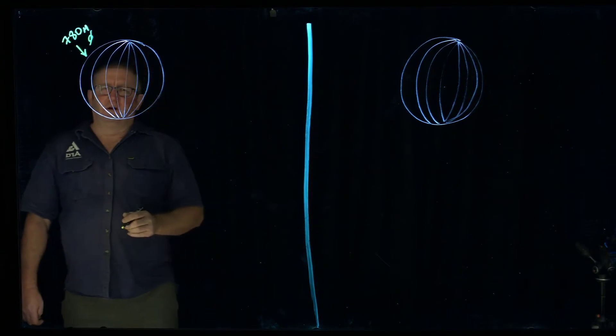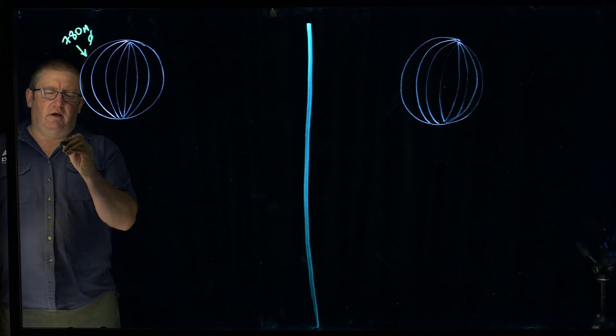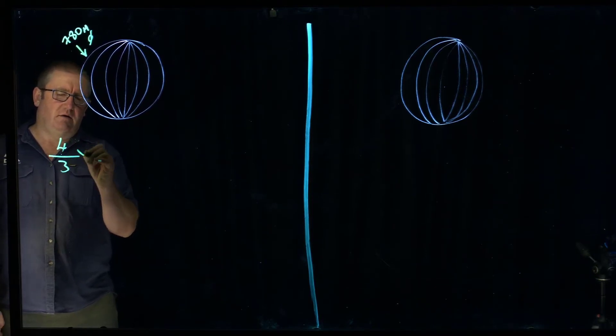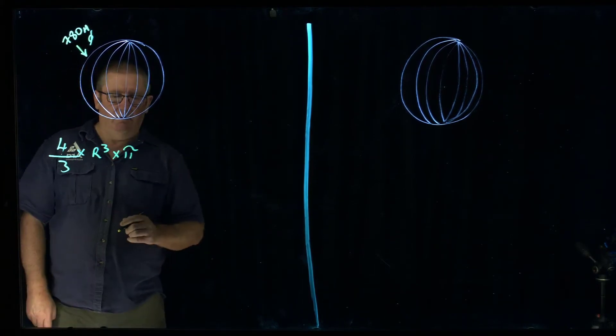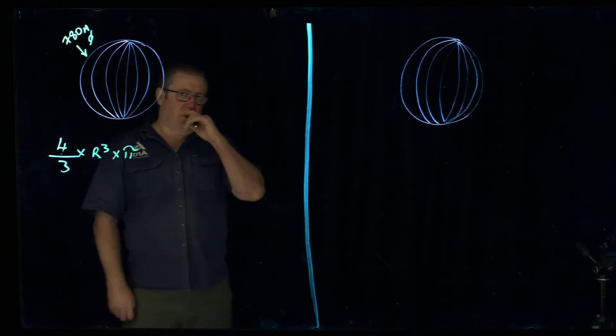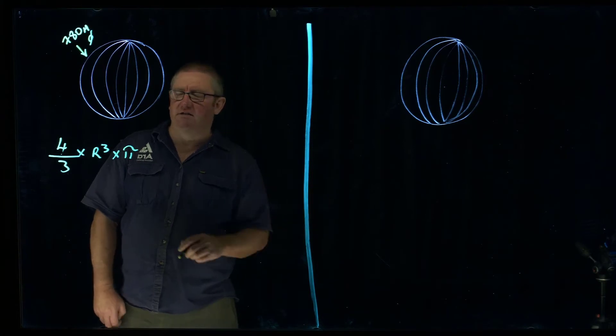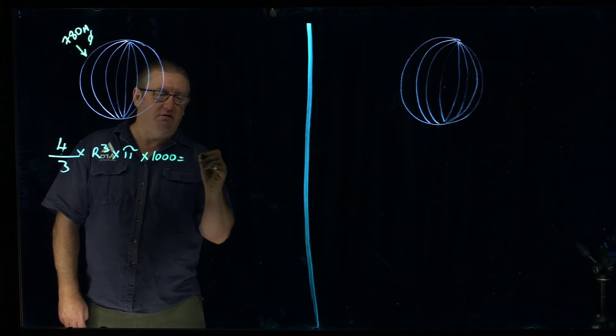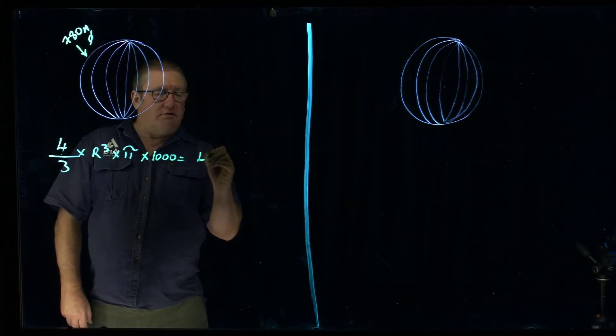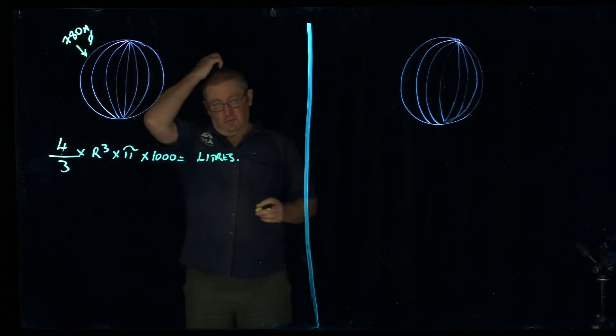And our formula to work out the cubic metres is 4 over 3 times r cubed times pi. We work that out, that will give us our metres cubed. Then we could times it by 1,000 and that will give us our litres. There's 1,000 litres in a cubic metre. So that's the formula to determine the litres.